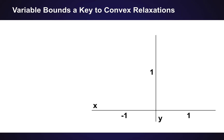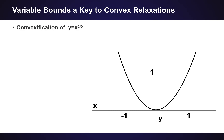To motivate what we're going to get into with bound tightening, it's key to think about how bounds on the variables in your problem connect to convex relaxations. Let's start with a very simple example. Imagine you had a non-convex constraint, y equals x squared. The reason this is non-convex is because you should be on this black curvy line and not a convex set inside of the black curvy line.